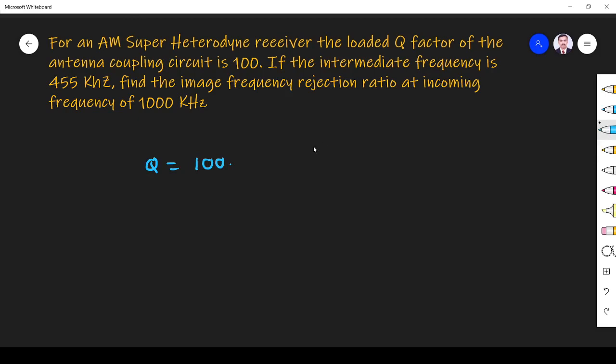If the intermediate frequency is 455 kilohertz, find image frequency rejection ratio at incoming frequency of 1000 kilohertz. So the signal frequency is 1000 kilohertz.